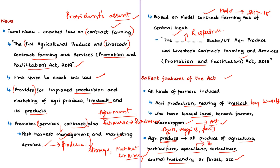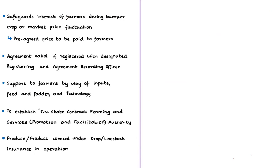Sericulture, also known as silk farming, is the cultivation of silkworms to produce silk. The law will safeguard the interest of farmers during times of bumper crop or when market prices fluctuate. A bumper crop means a crop that has yielded an unusually high agricultural harvest. During the peak harvesting period, prices fall to very low levels because of this unusual yield.